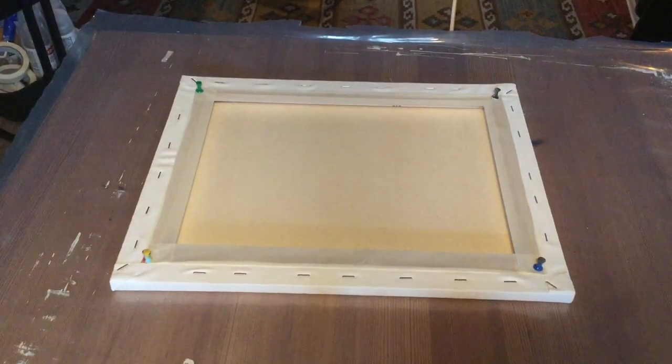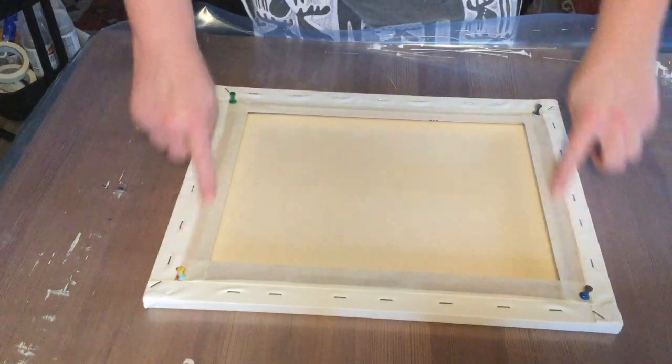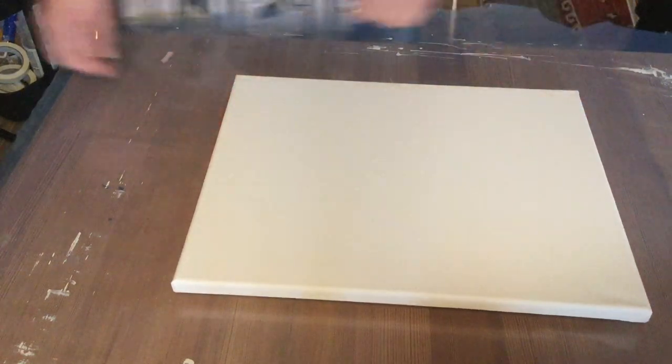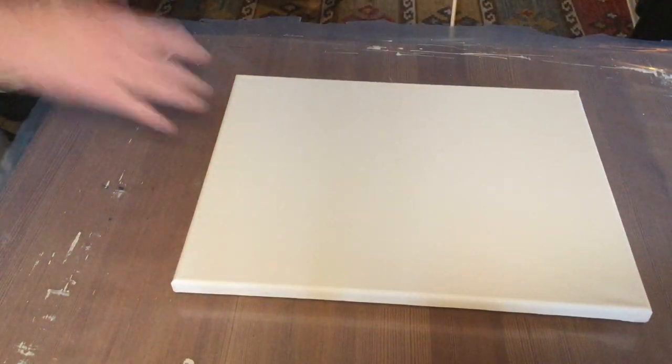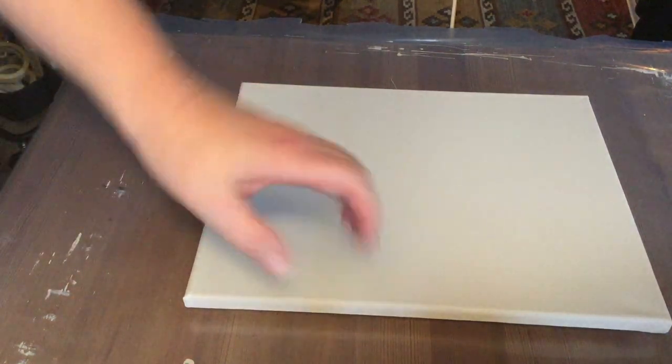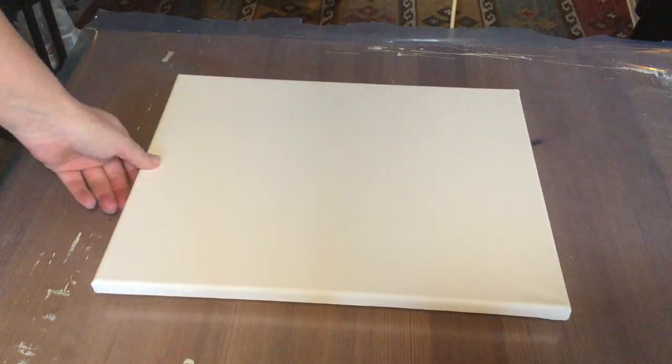So my canvas is getting ready. I put some tape under here and also this, so it can stand. I haven't gessoed this because this canvas is gessoed already. I just spray some water on the back and leave it like that for just a few minutes, and it will be really good to work with.